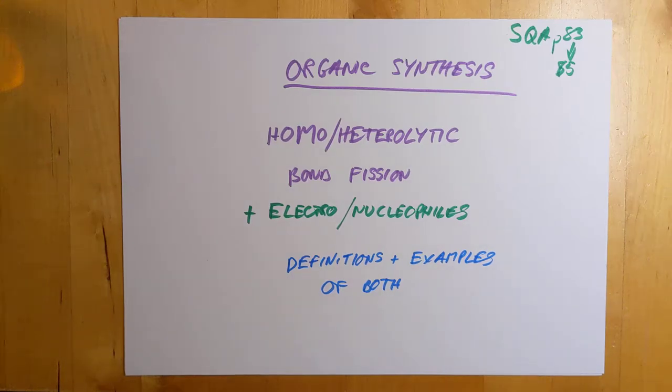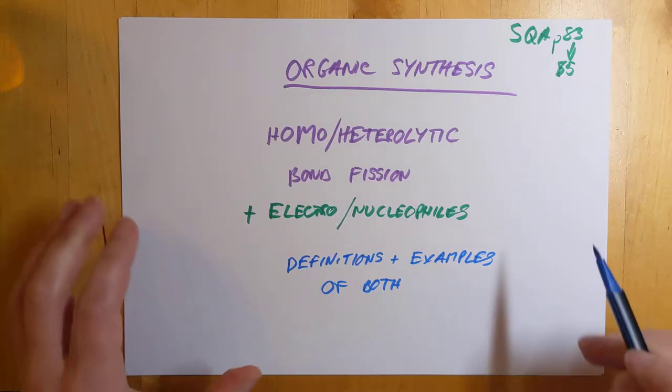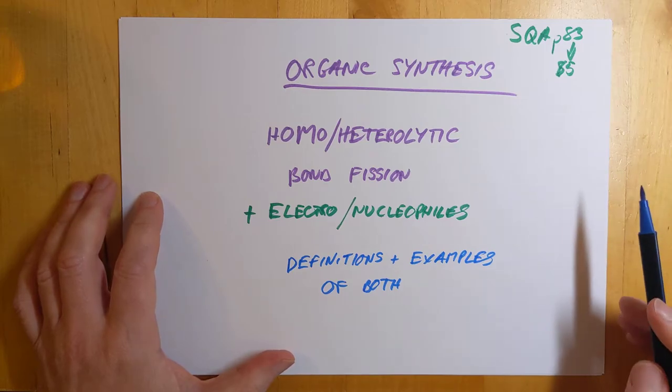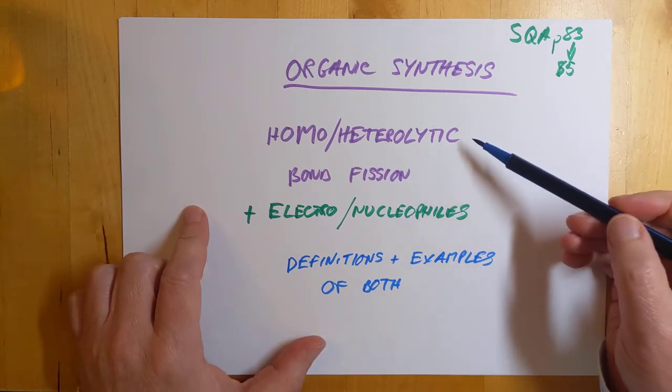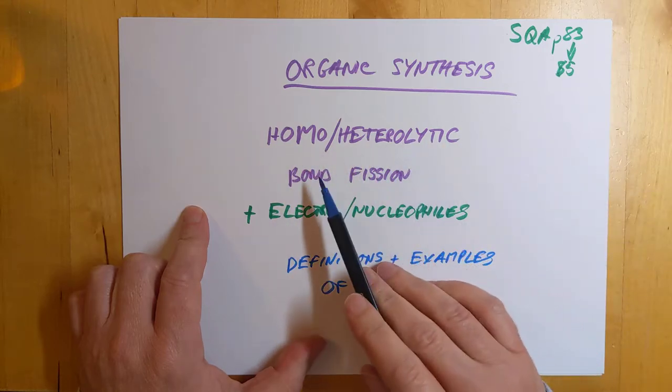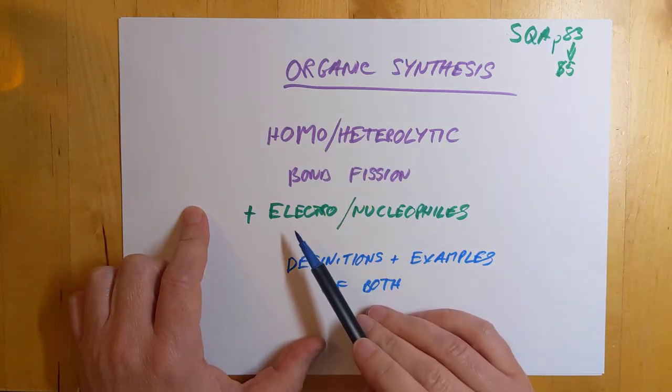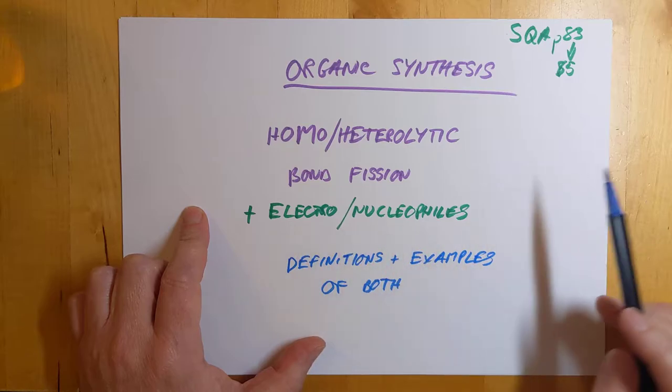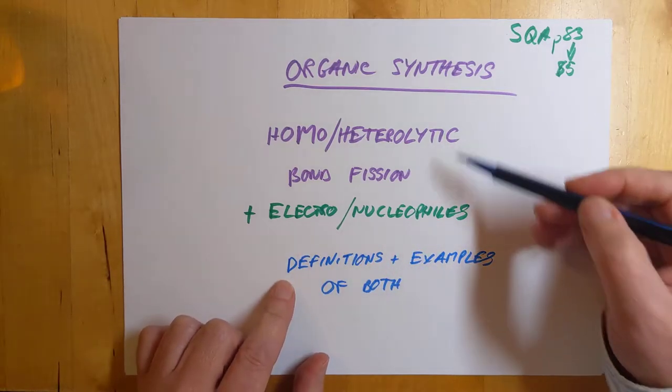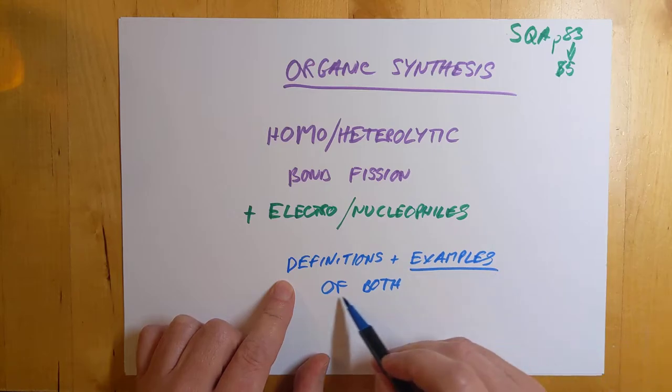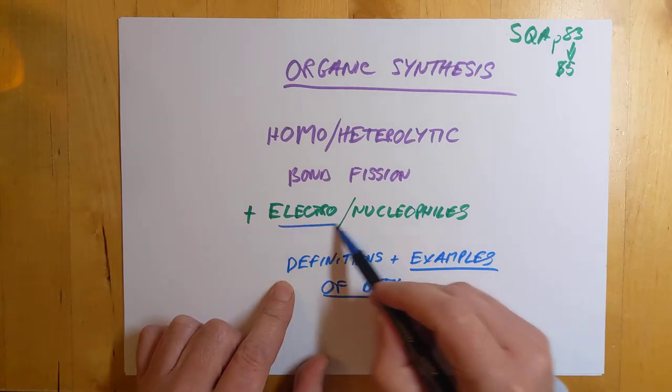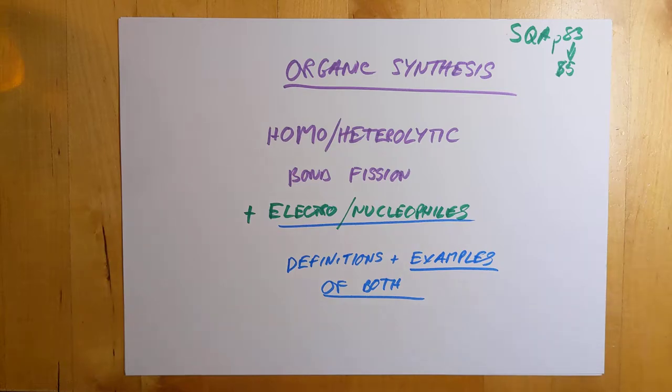Good evening folks, organic synthesis, another video on how to take organic molecules apart and make better ones from them. I would like to look tonight at homo and heterolytic bond fission and I would also like to look at electrophiles and nucleophiles. I'm going to do definitions of each of these and examples. The SQA want you to know some examples of both, particularly these ones.